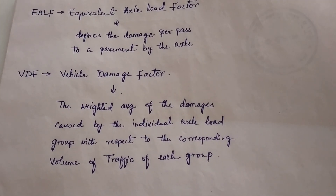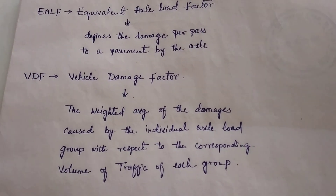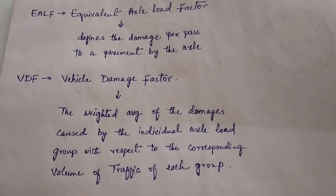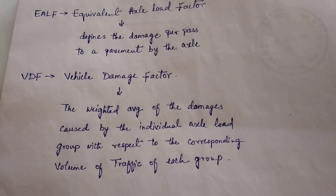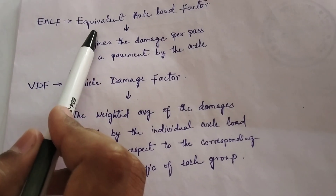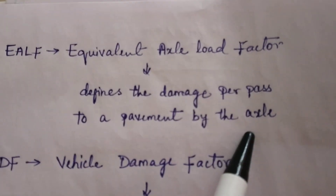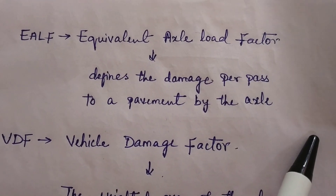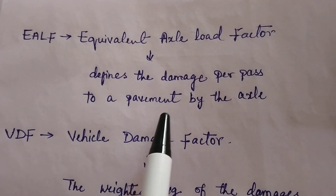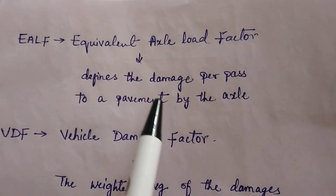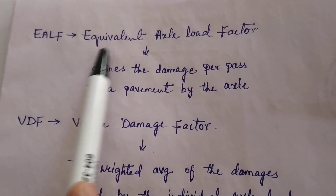In today's video I am going to show how to calculate EALF and VDF. First of all we need to know what is EALF and VDF. EALF is defined as the damage per pass to a pavement by the axle — whenever a vehicle is running on the flexible pavement it will cause rutting or deterioration. This damage is termed as EALF. The full form of EALF is Equivalent Axle Load Factor.